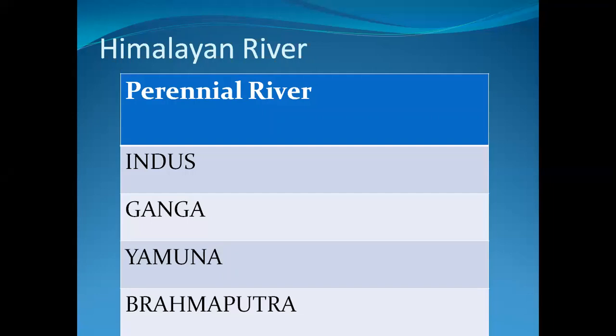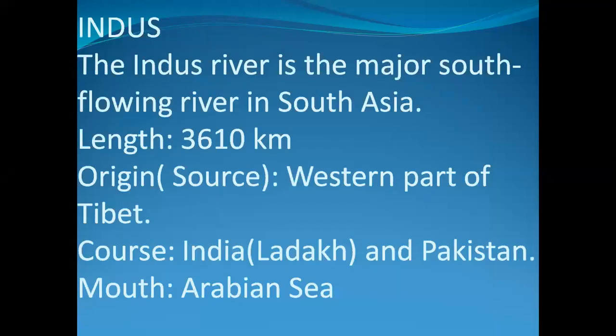We'll begin with the Indus river. The Indus river is the major south-flowing river in South Asia. The length of the Indus river is 3,610 km. The source of the Indus river is the western part of Tibet.